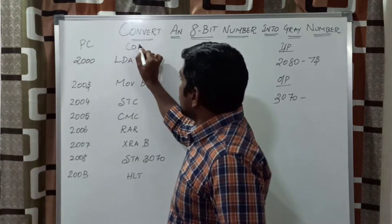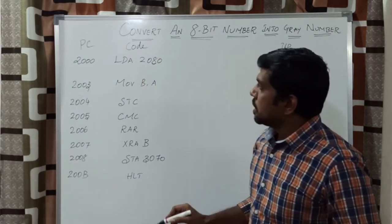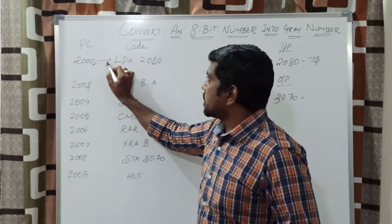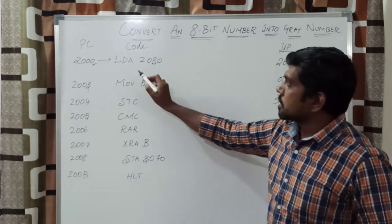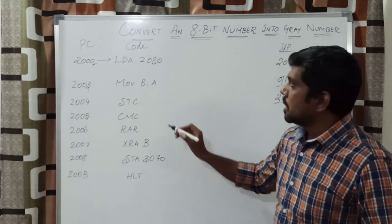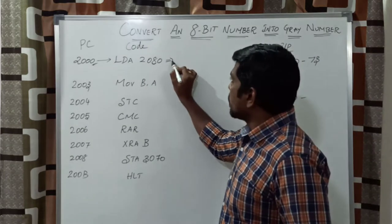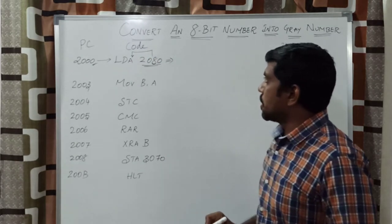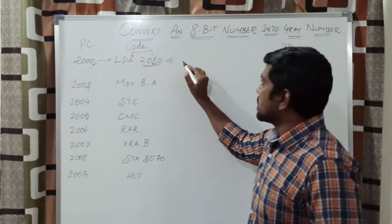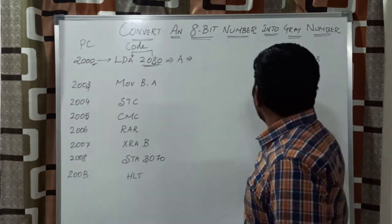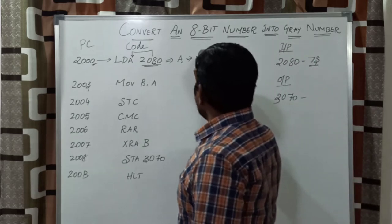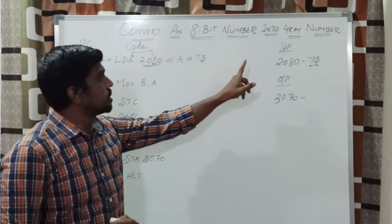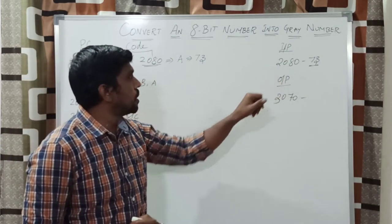The second column contains the code. The origin of the program is 2000H. In this 2000H memory location, the instruction is LDA 2080H. This instruction says whatever value is present in this memory location, the content is transferred to the accumulator. After execution of this instruction, the accumulator value is 73. This 73 is an 8-bit number, stored in memory location 2080H.